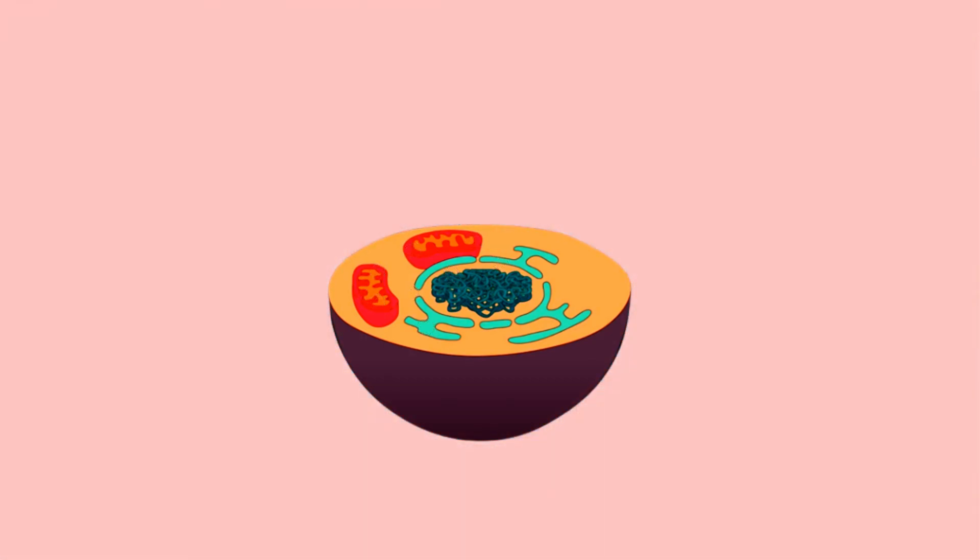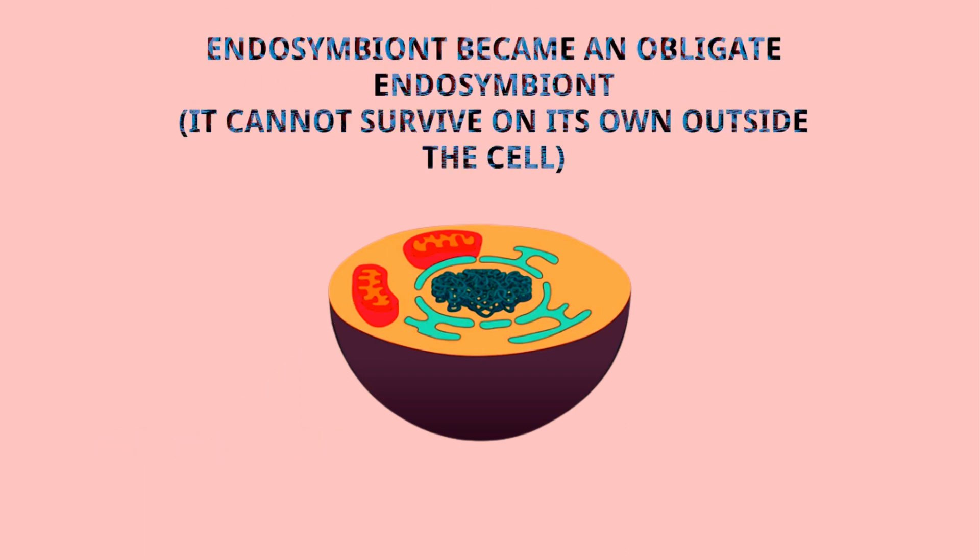the eukaryote and the endosymbiont become best pals, with the endosymbiont becoming a mitochondrion. At this point, the endosymbiont became an obligate endosymbiont, meaning it cannot survive on its own outside the cell.